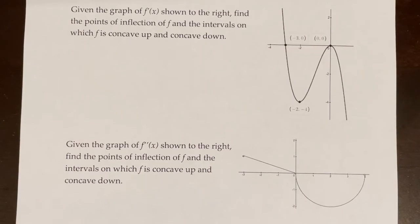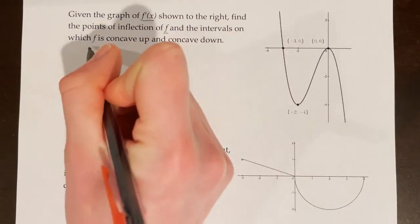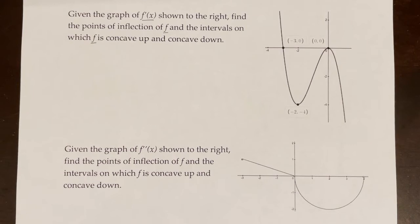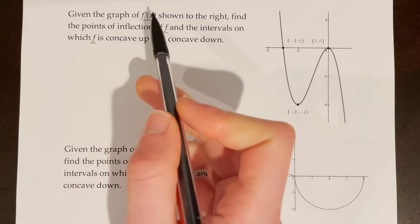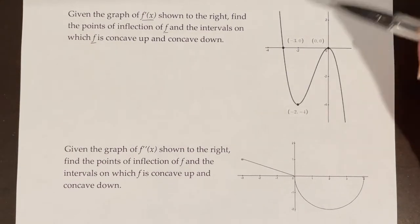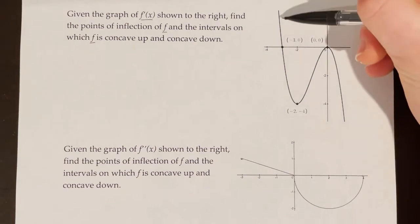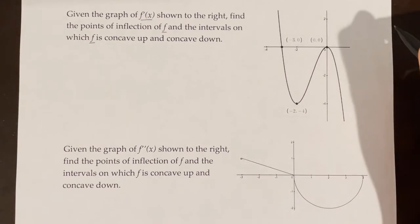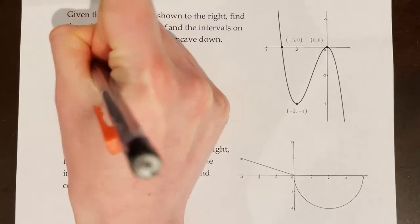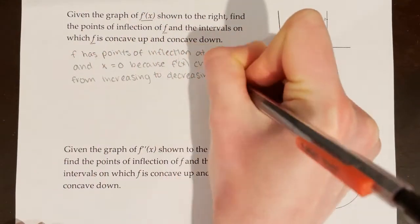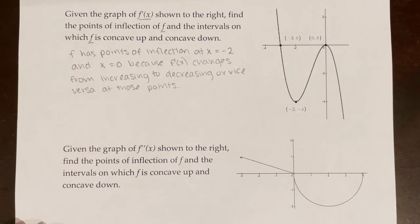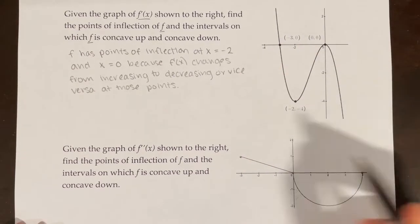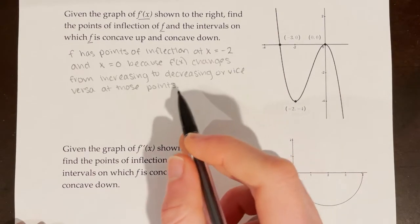Given the graph of f' shown, find the points of inflection of f and the intervals on which f is concave up and concave down. We're given the graph of f', so we look for where f' changes from increasing to decreasing or vice versa. The graph is decreasing then changes at x equals negative 2, then increasing, then changes at x equals zero, then decreasing. This means we have points of inflection at x equals negative 2 and x equals zero — because f', this graph, changes from increasing to decreasing or vice versa at those points.